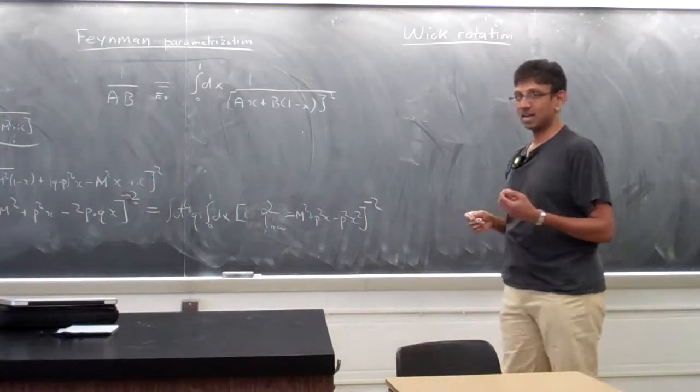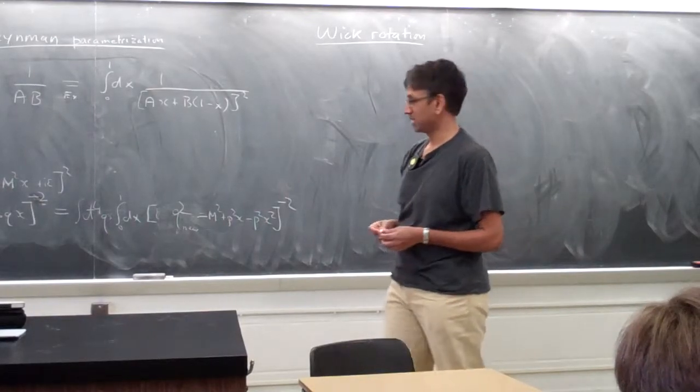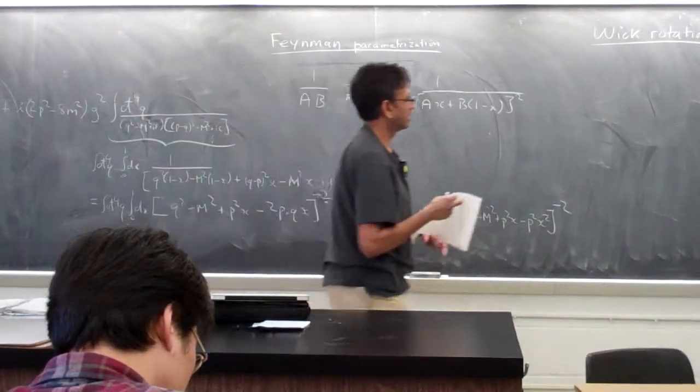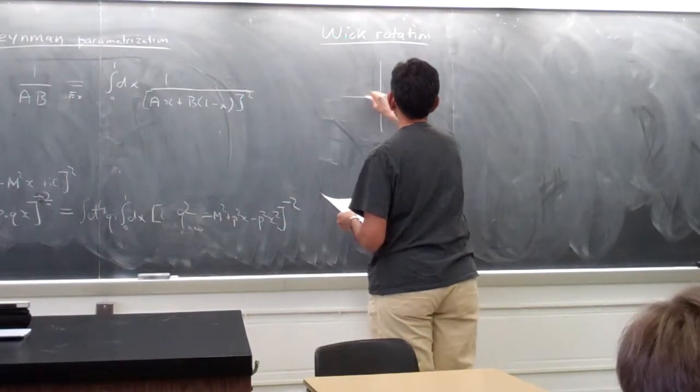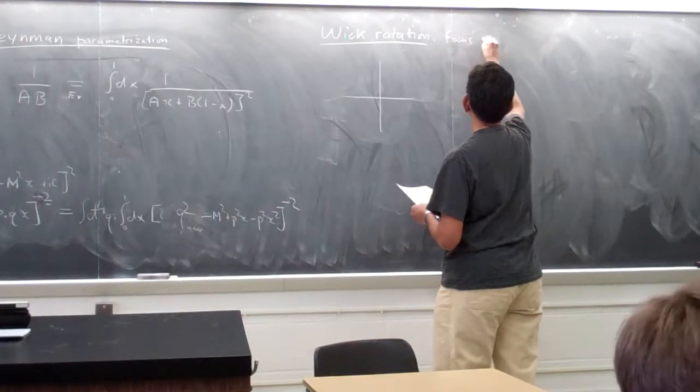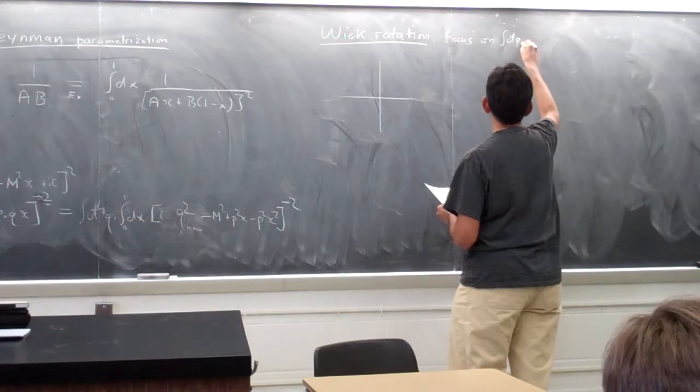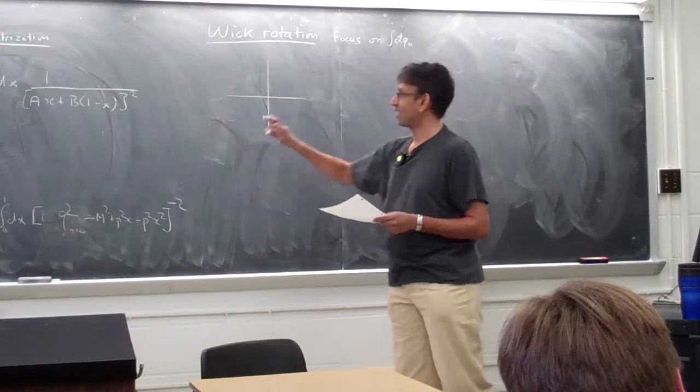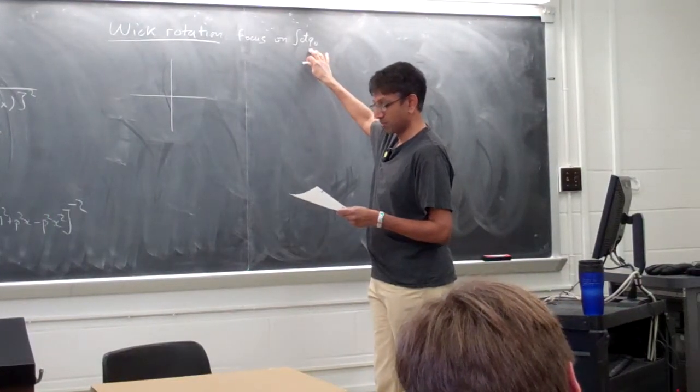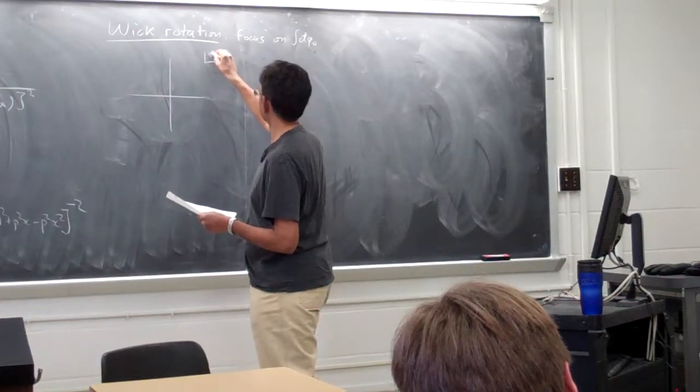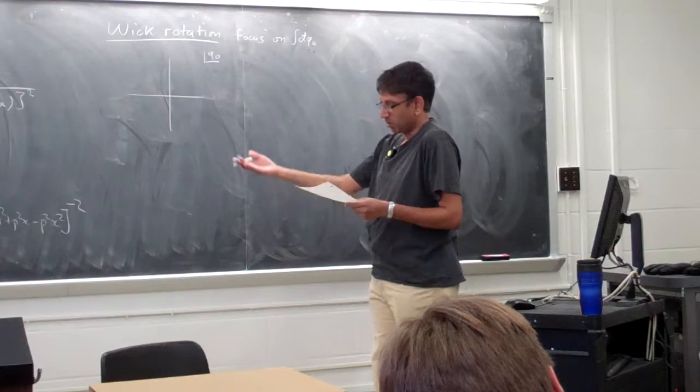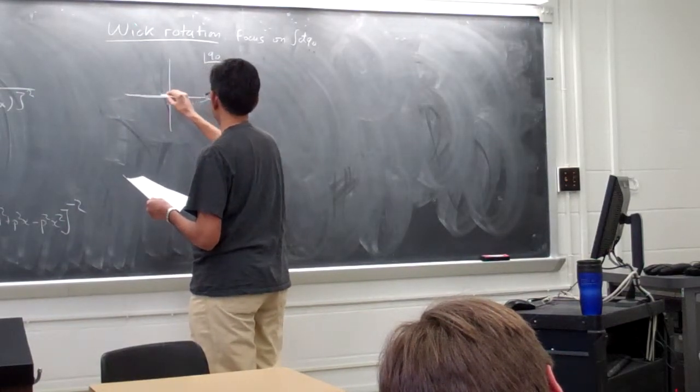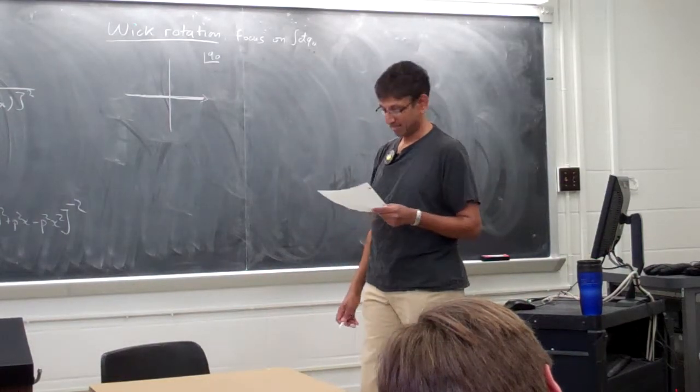And it involves just doing an analytic contour rotation in the q zero, the energy complex plane. So let's just see how that works. So right now, we're focused on the integral dq zero. Let's keep the spatial integrals out the front. I only want to do this integral for a start. I want to imagine doing this integral. And so I'm drawing the q zero complex plane. Of course, I'm supposed to just integrate real q zero. Right? So I'm just supposed to do this integral. That's my contour. Nothing complex about it. However, we can analyze where the poles are in this one.